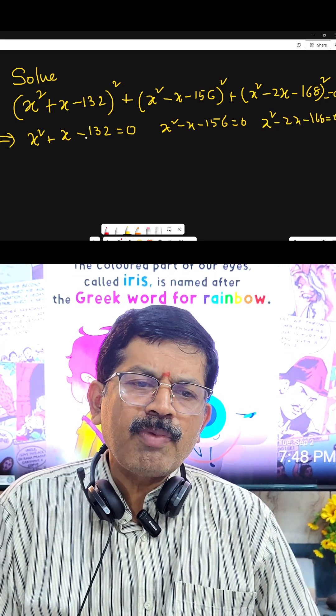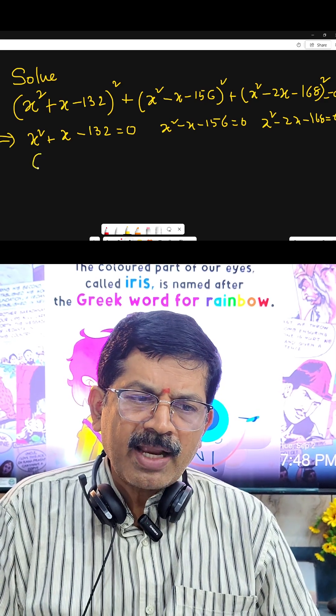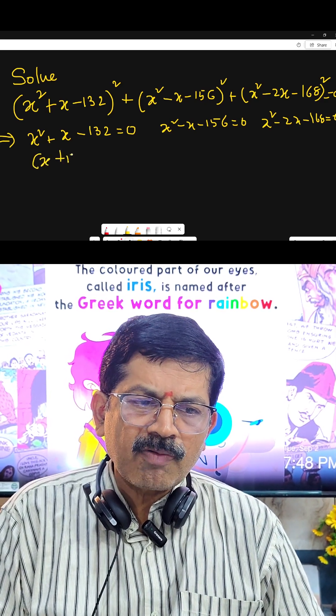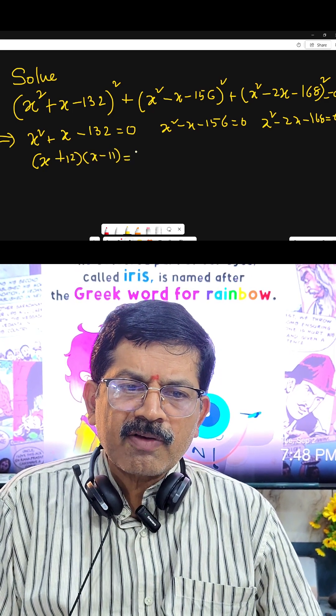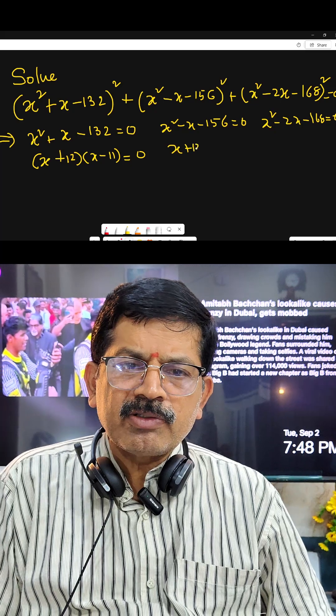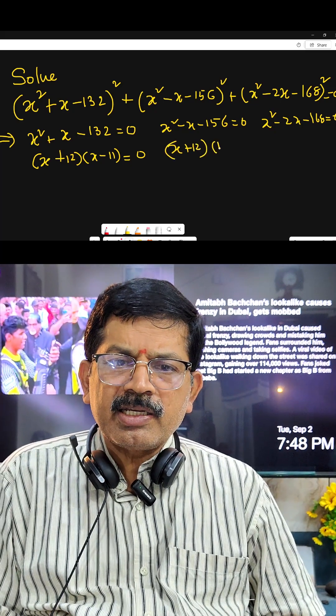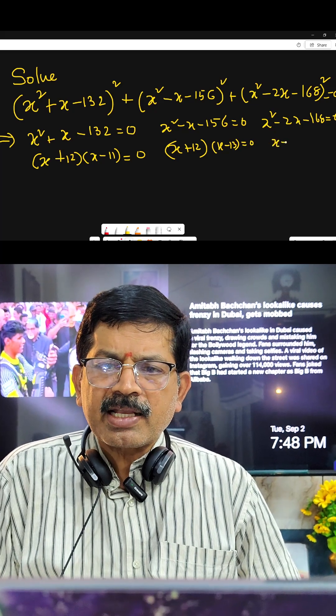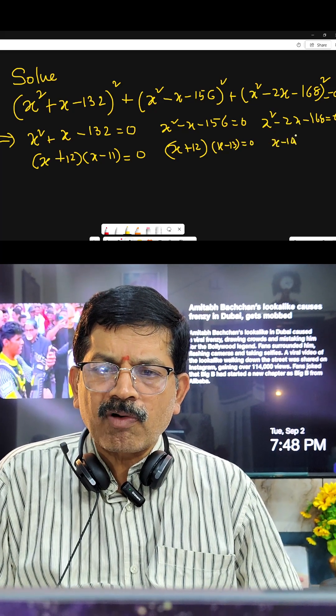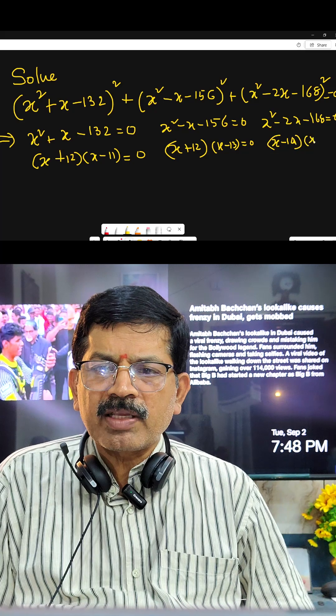Now you can solve by splitting the middle term. The factors of first one is (x + 12)(x - 11). The factors of second one is (x + 12)(x - 13) = 0. The factors of third one is (x - 14)(x + 12) = 0.